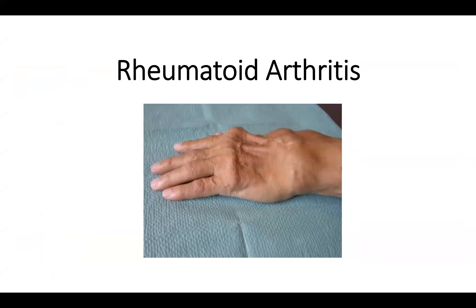This is a typical sample from a patient who has had rheumatoid arthritis for several years. As you can clearly see, there is swelling here, and really massive swelling here, which comes from the joint and also from the tendons.